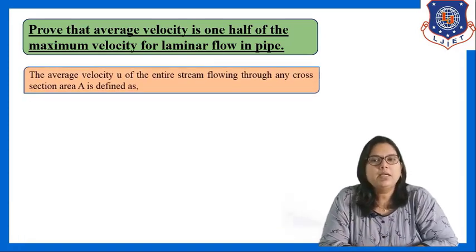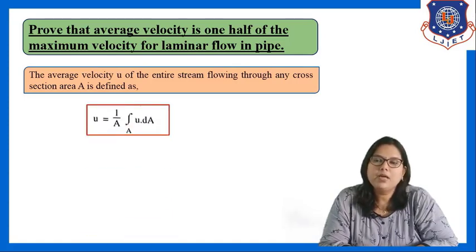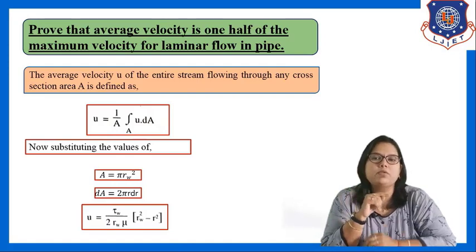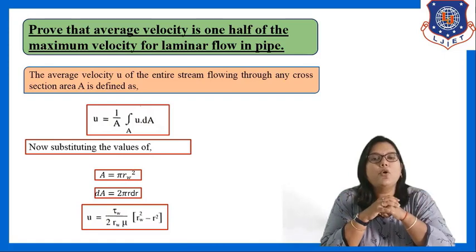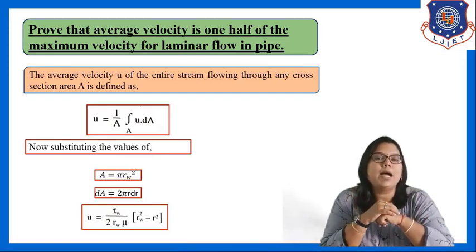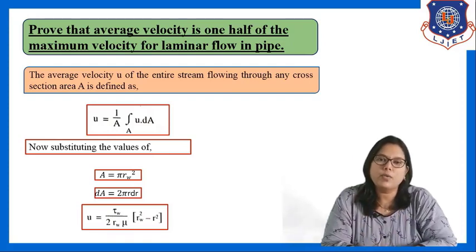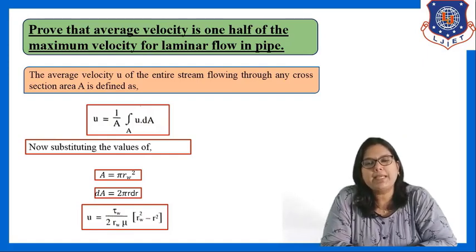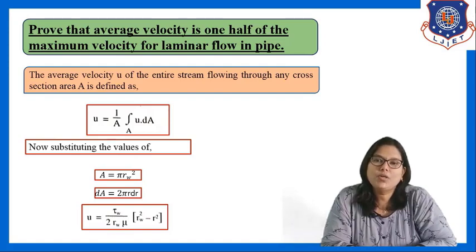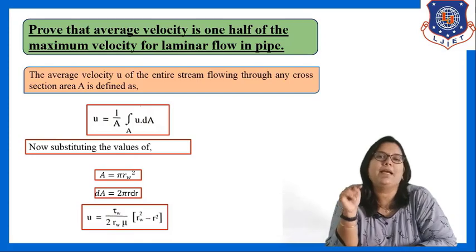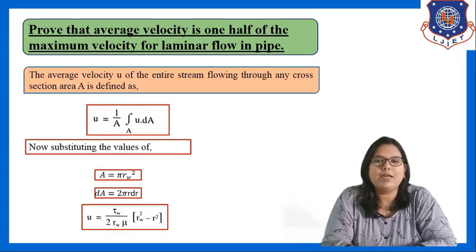The average velocity ū of the entire stream flowing through any cross-sectional area A is defined as ū = (1/A) ∫ u dA. In this equation, substitute A = π·r_w² (area of the whole pipe, where r_w is the radius of the entire pipe), dA = 2π·r dr, and local velocity u = (tau_w / 2·r_w·mu) × (r_w² − r²) from the previous derivation.